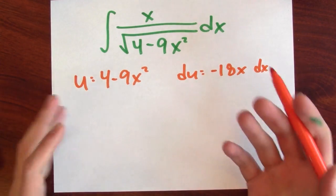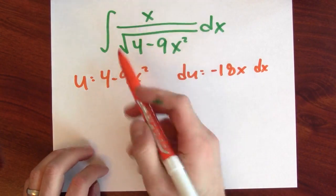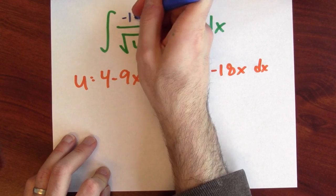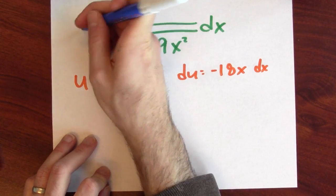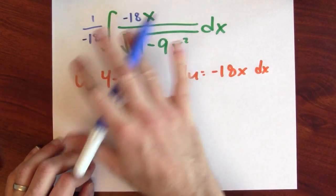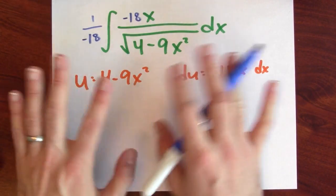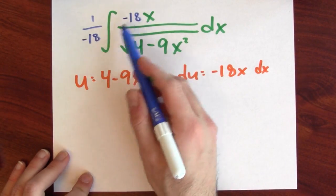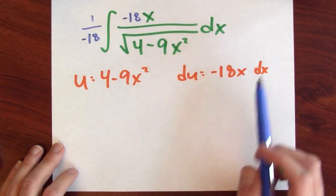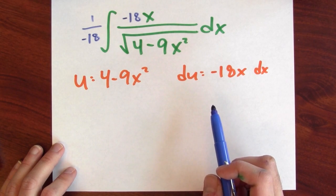And now you're thinking, this is terrible. I don't see a negative 18 anywhere in this problem, but I can introduce one. I can make a negative 18 there as long as I cancel it with 1 over negative 18 there. So I've done nothing to the anti-differentiation problem. I haven't changed the problem at all. This is just multiplying by 1 if they cancel. But I've now got a du in my integrand.